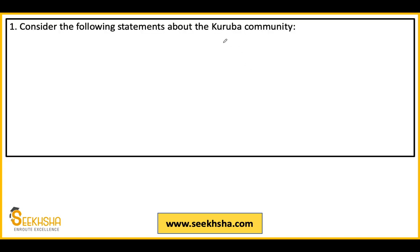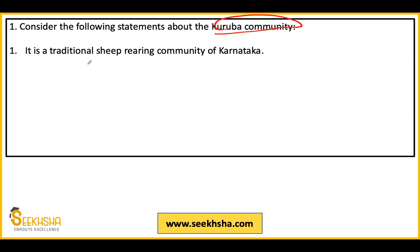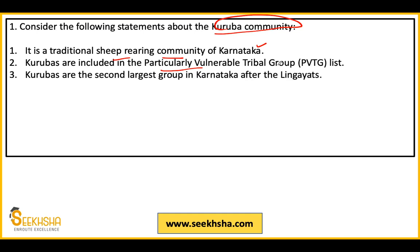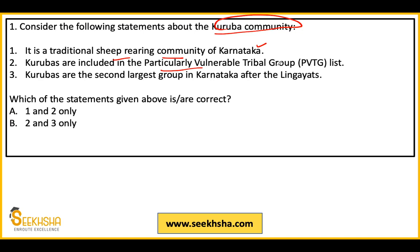First question: Consider the following statements about the Kuruba community. Statement 1 says it is a traditional sheep-rearing community of Karnataka. Statement 2 says Kurubas are included in the Particularly Vulnerable Tribal Group (PVTG) list. Statement 3 says Kurubas are the second largest group in Karnataka after the Lingayats. Which statements are correct? Options: A) 1 and 2 only, B) 2 and 3 only, C) 1 only, D) 1, 2, and 3.